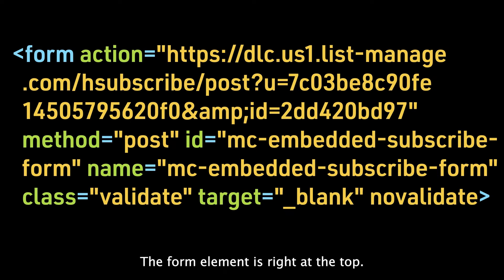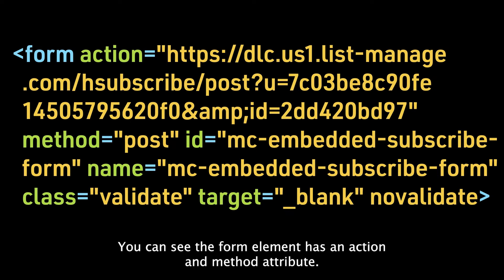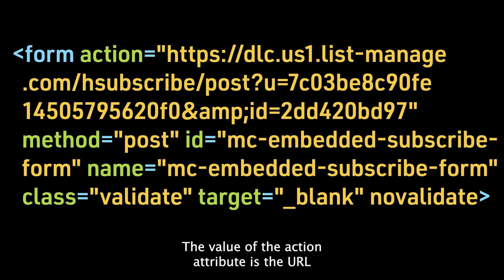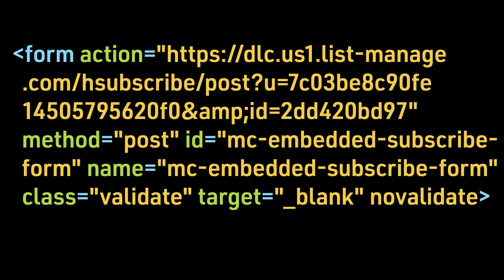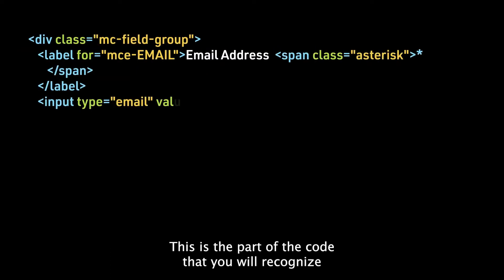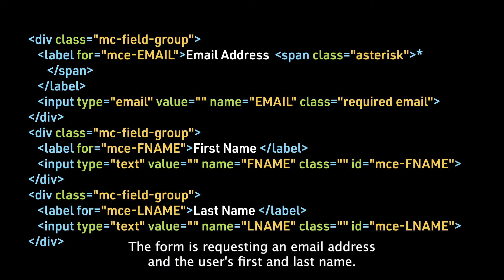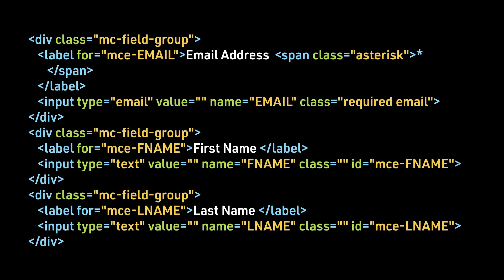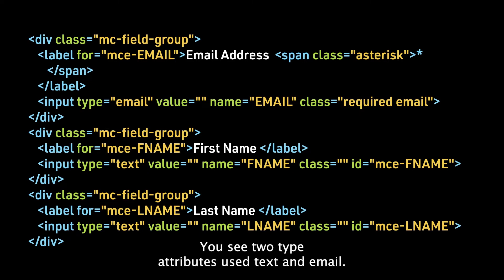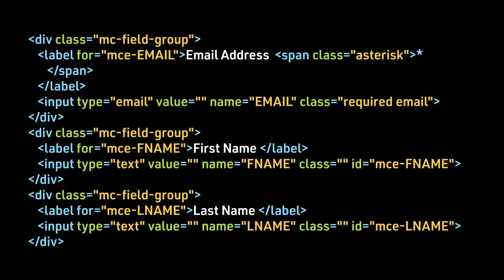The form element is right at the top. You can see the form element has an action and method attribute. The value of the action attribute is the URL that sends the data to our account in MailChimp. This is the part of the code you will recognize from our previous discussion of forms. We see both label and input elements. The form is requesting an email address and the user's first and last name. You see two type attributes used: text and email.